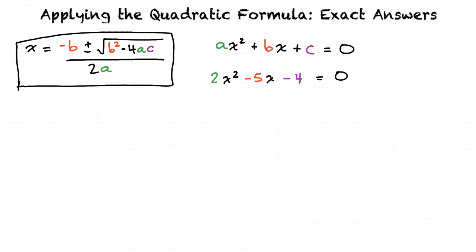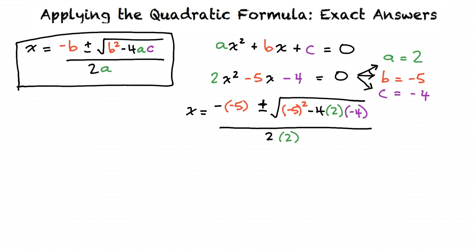It looks like a is 2, b is negative 5, and c is negative 4. Exactly! Let's substitute them into the equation now. We now have x equals negative negative 5 plus or minus the square root of negative 5 squared minus 4 times 2 times negative 4 all divided by 2 times 2.